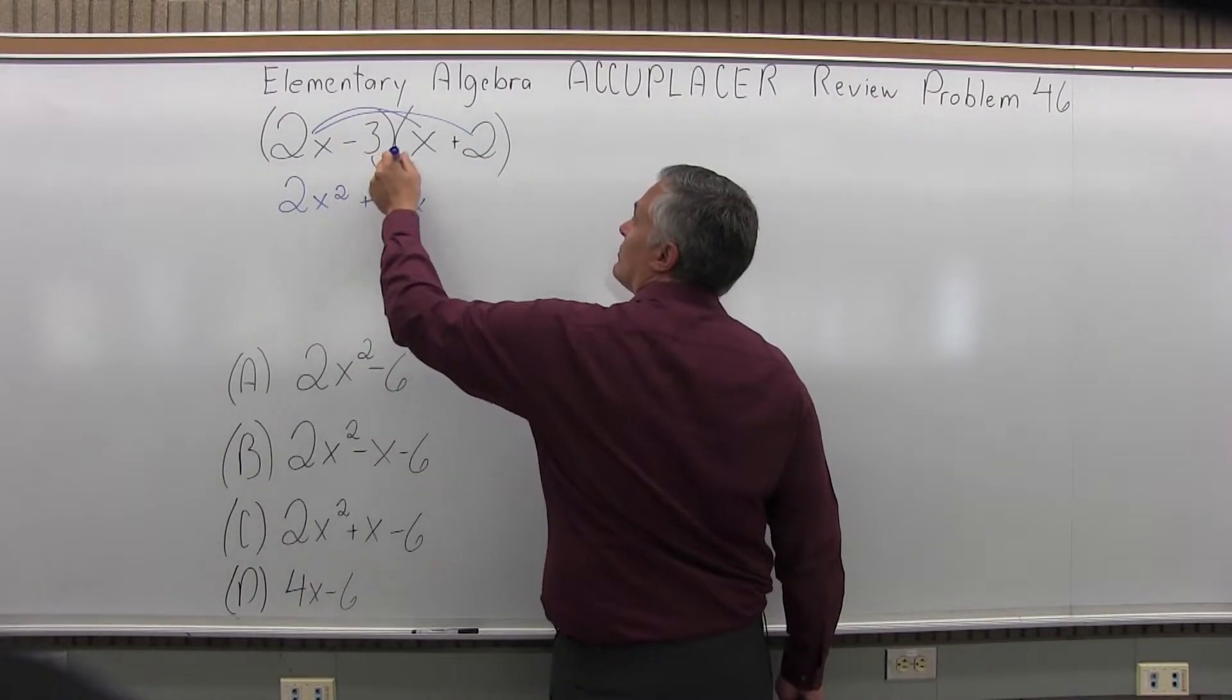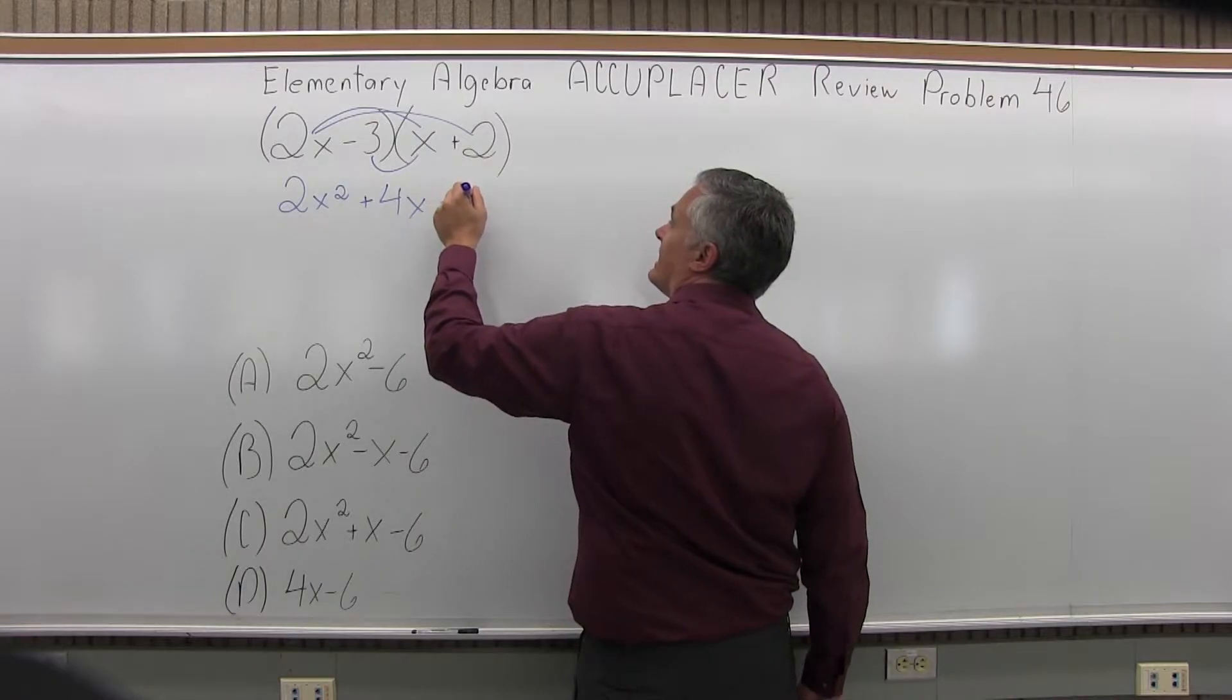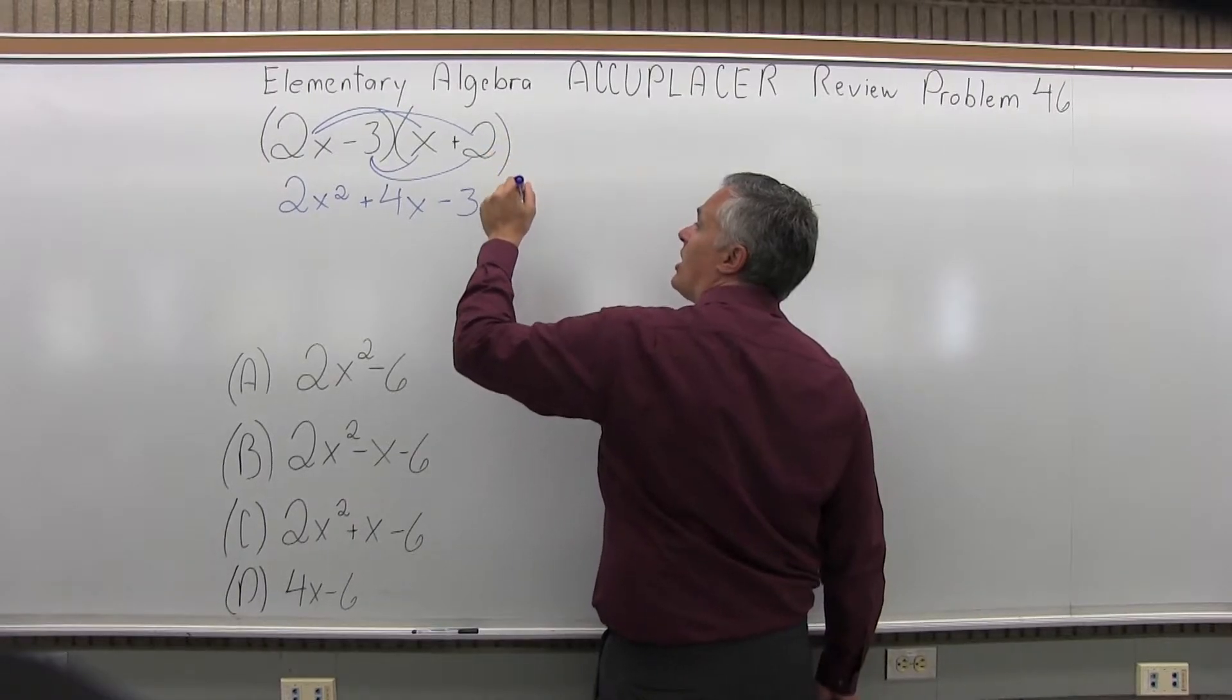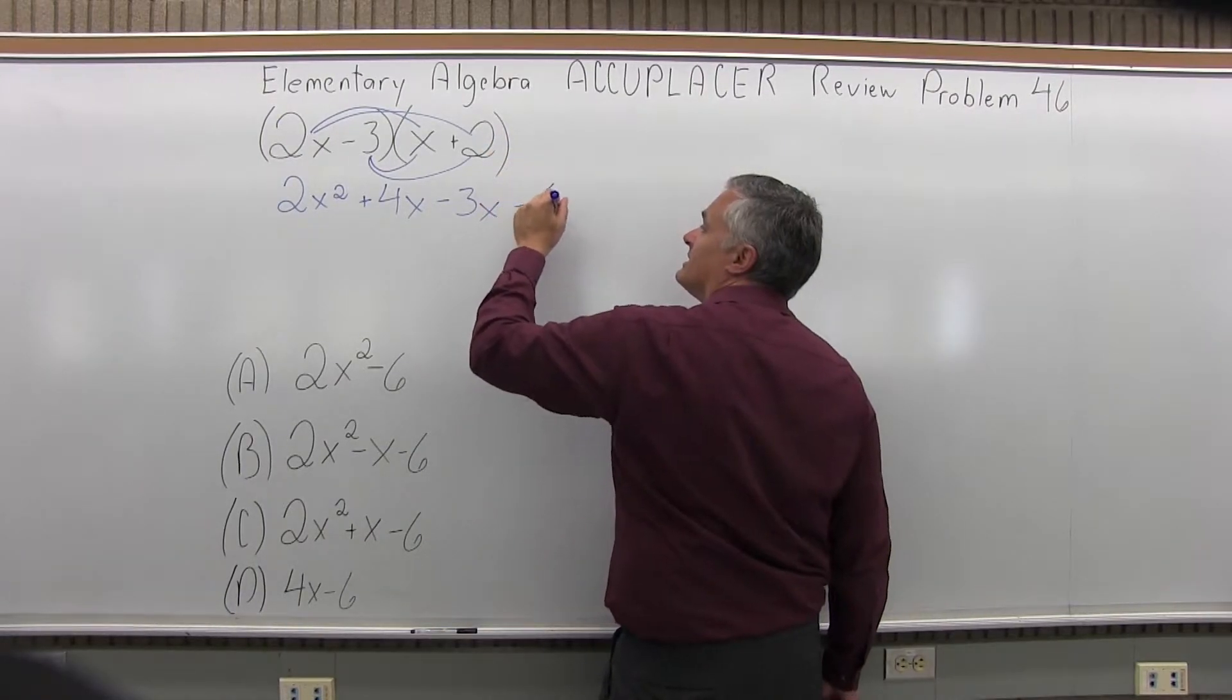And now negative 3 times x is negative 3x. And finally negative 3 times positive 2 is negative 6.